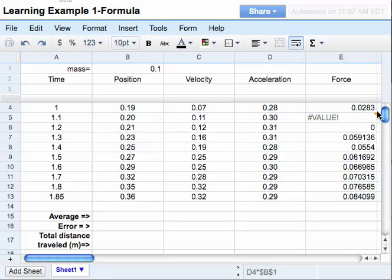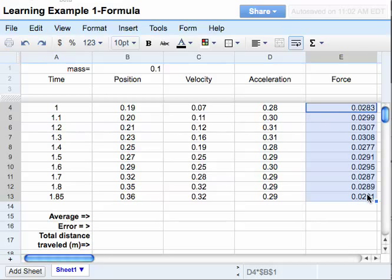So I'll take it, grab my little square, which I don't have. Let's see, grab the little square, there's the plus sign. Grab, drag it down. Now I've got all my force values.